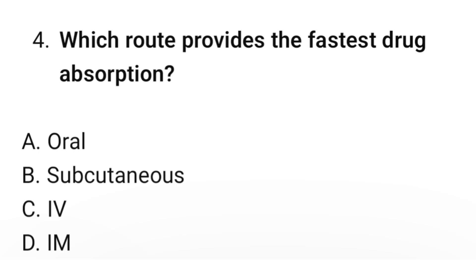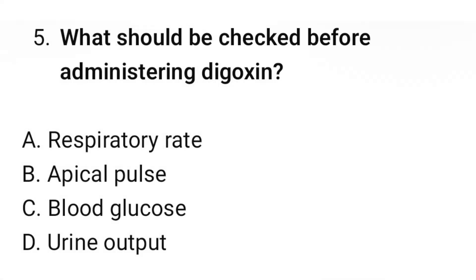Question number 4: Which route provides the fastest drug absorption? The correct option is C: Intravenous. Question number 5: What should be checked before administering digoxin? The correct option is B: Apical pulse.